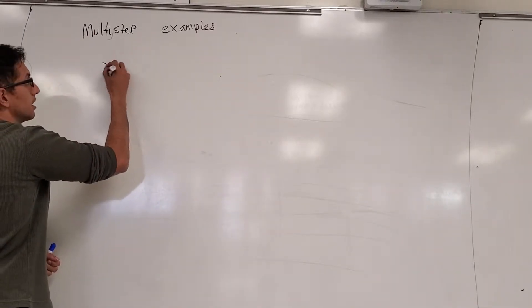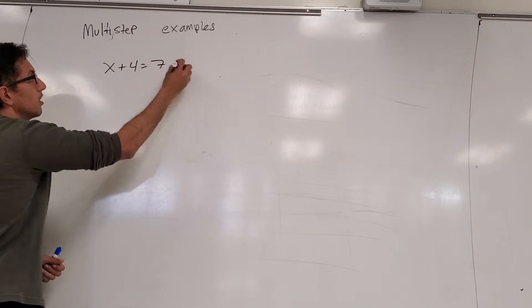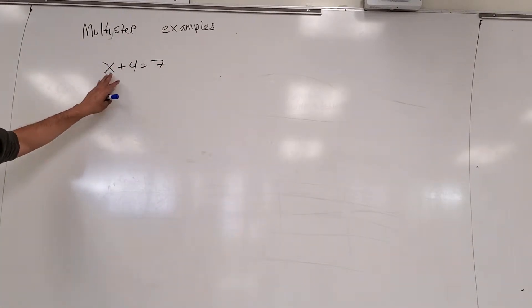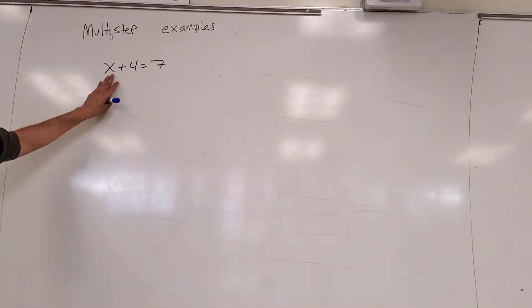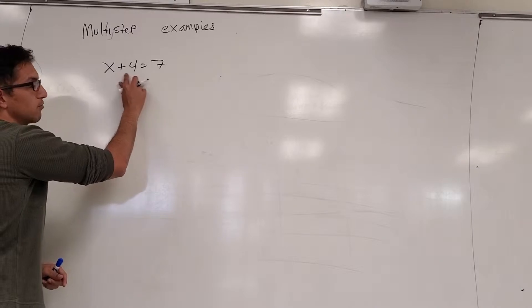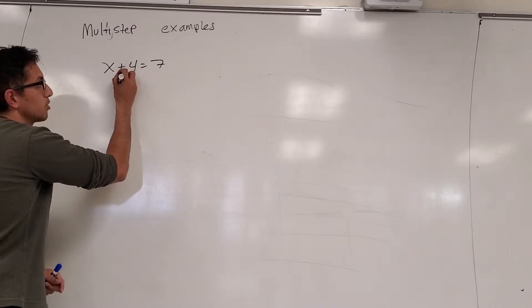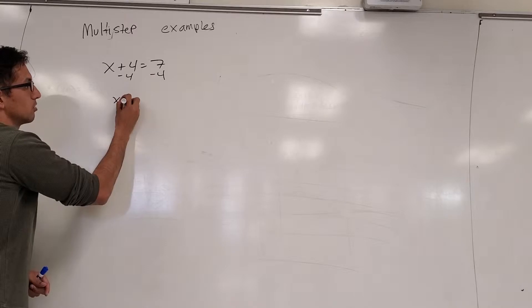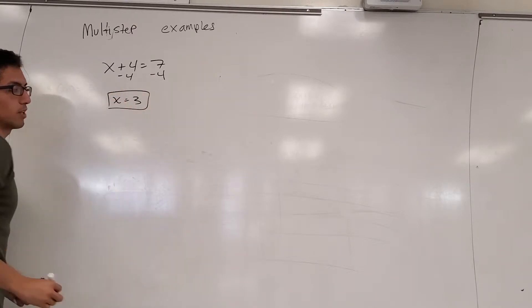First example, x plus 4 equals 7. The goal of multi-step equations is to solve for the variable in the problem, in this case x. The variable is basically a letter that represents a number. We're adding a 4 to the x. In order to cancel out the 4, we have to subtract 4 from both sides. We get that x equals 3, and this is the solution for that one.